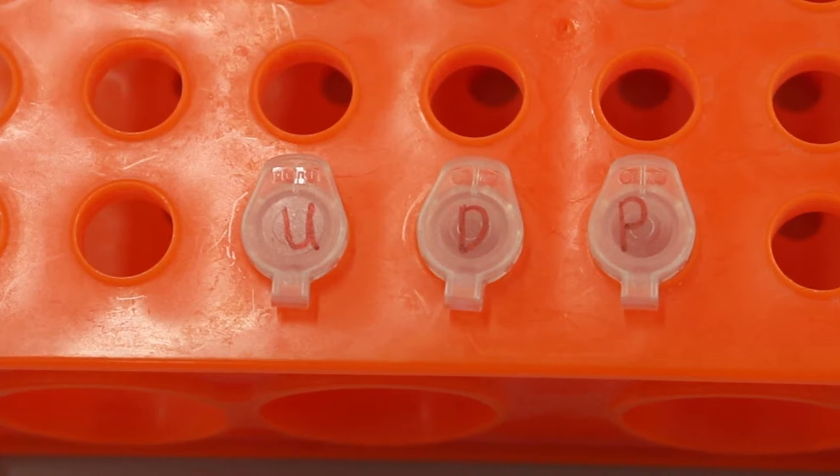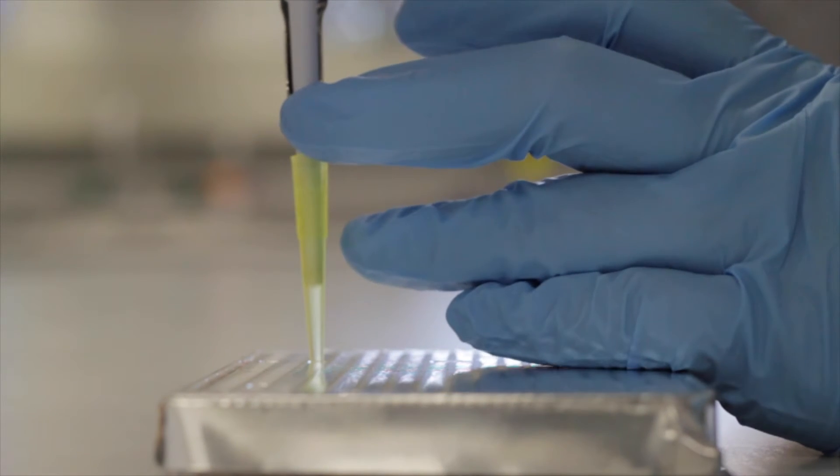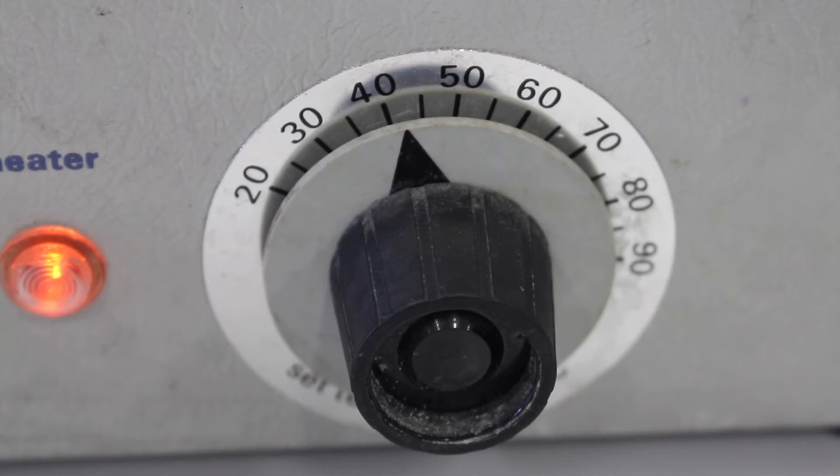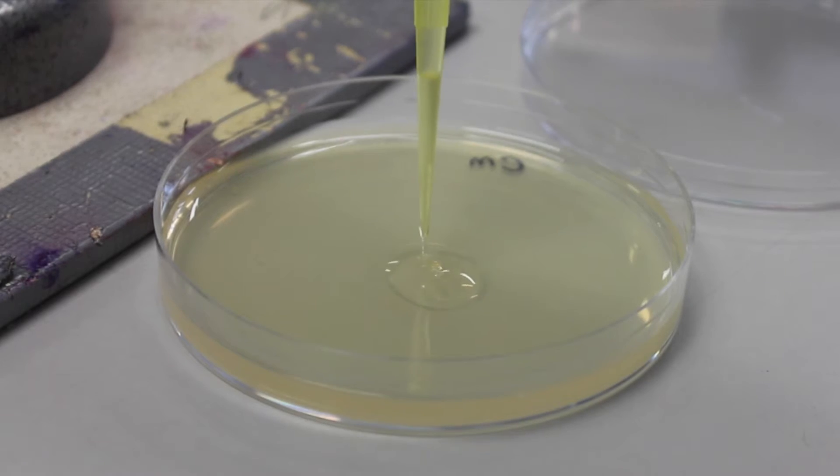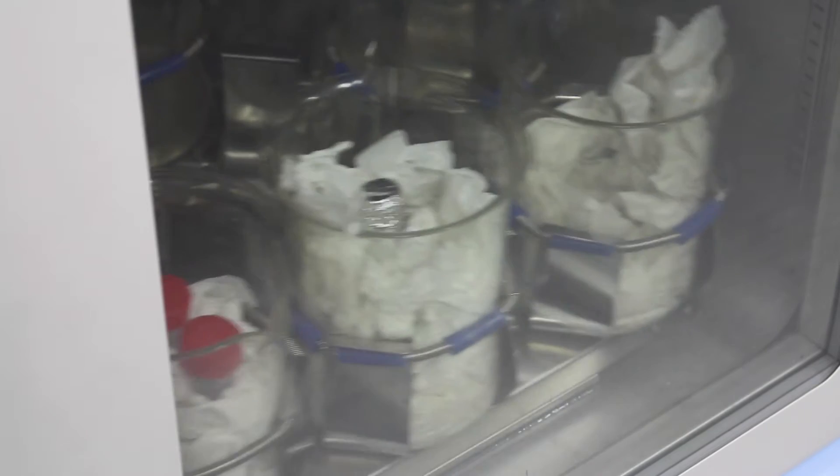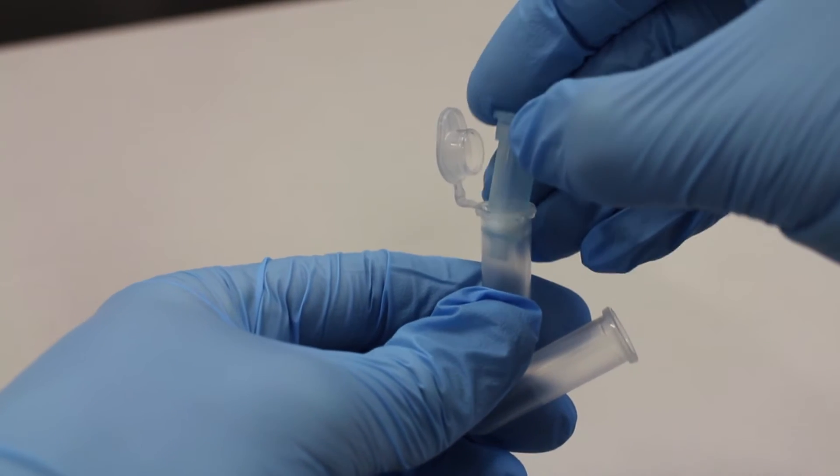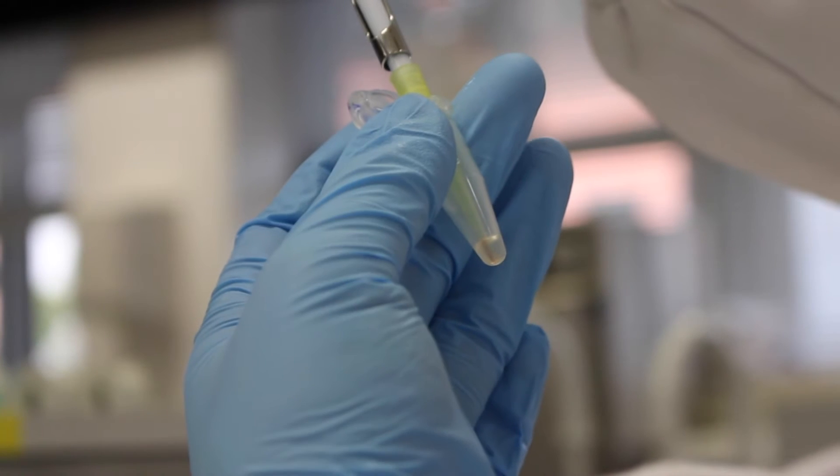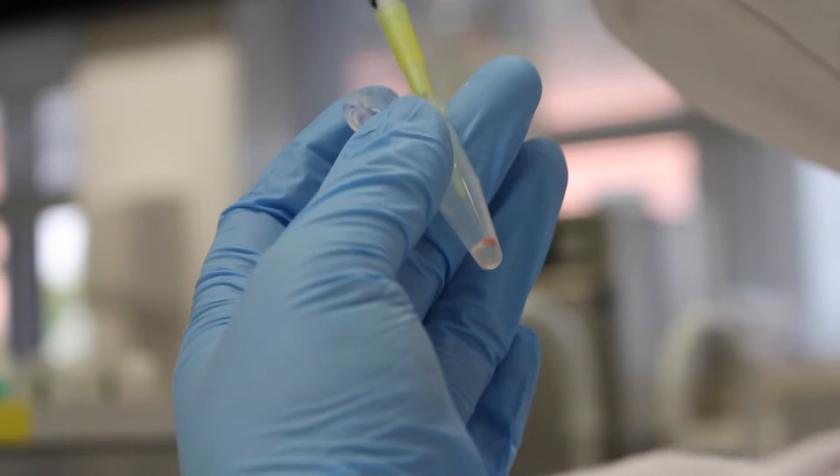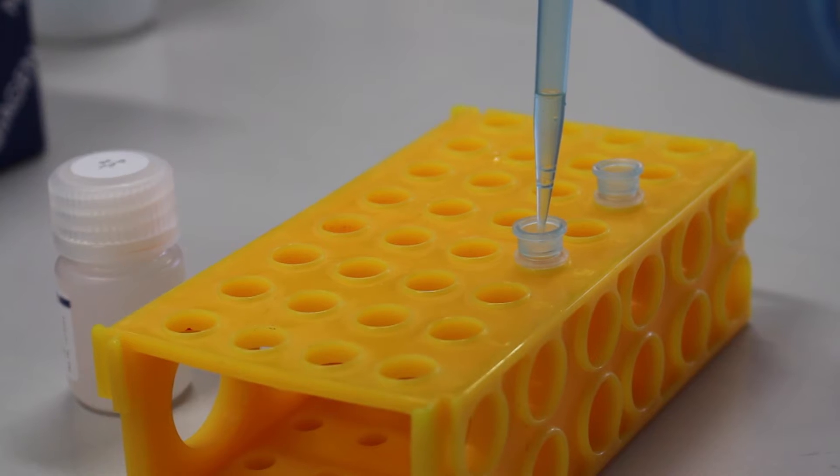To do BioBrick 3A assembly, you first need to transform E. coli cells with the plasmid DNA from the distribution kit. Set up an overnight culture of the transformed cells, then do a mini prep to produce purified plasmid DNA. Click on the links provided to learn how to carry out a transformation, prepare an overnight culture, and carry out a mini prep.